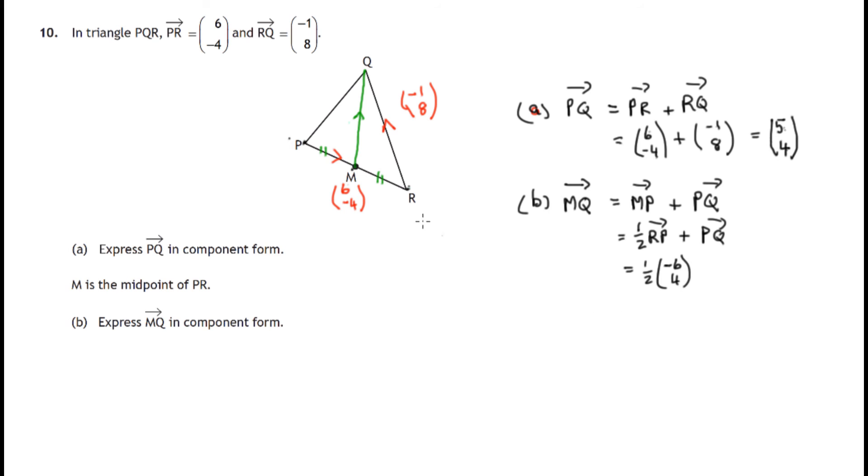So these are the components of travelling from R to P and we're doing half of that journey to get from M to P. Followed by the journey from P to Q. Well that's what we found in the first part of this question. We found it was 5 along to the right and 4 up. Components were (5, 4).